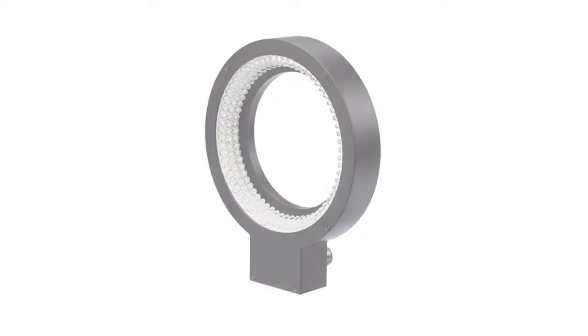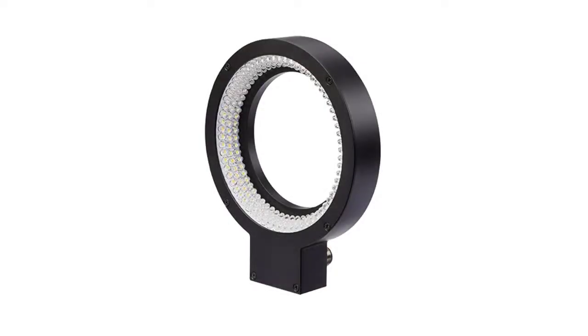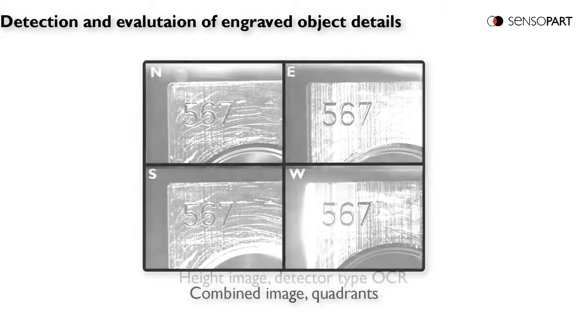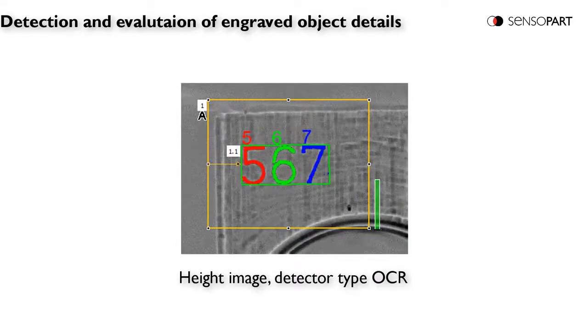We also have a dark field multi-shot ring light available. Here's an example. The multi-shot algorithm takes four different images with lighting from four different directions. This is an OCR.